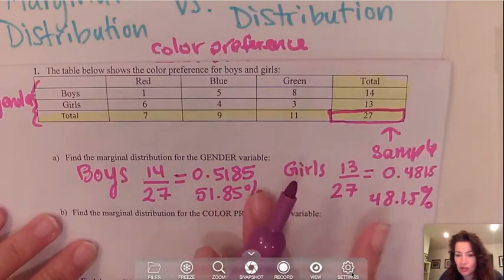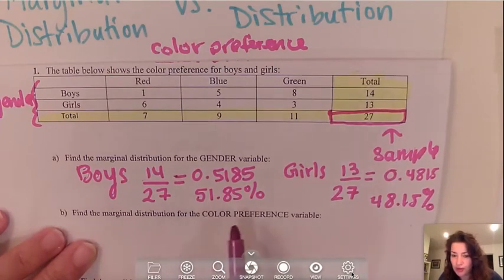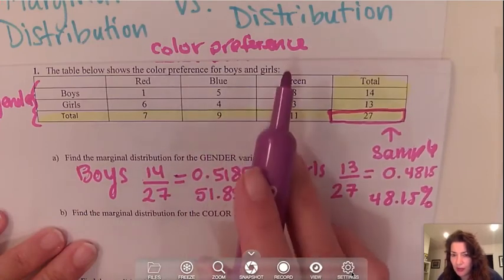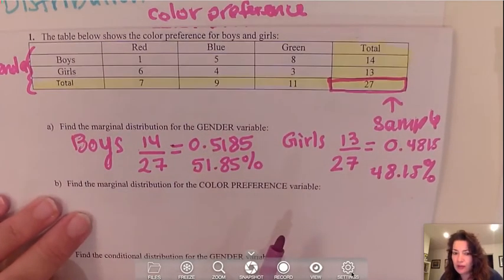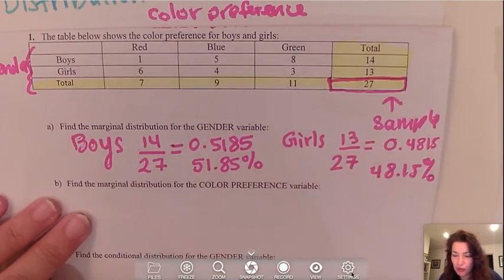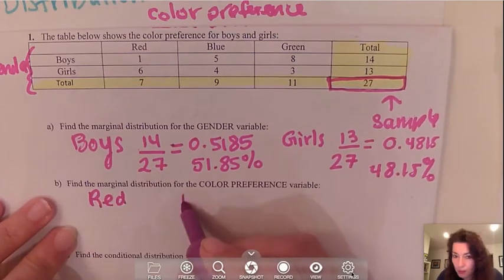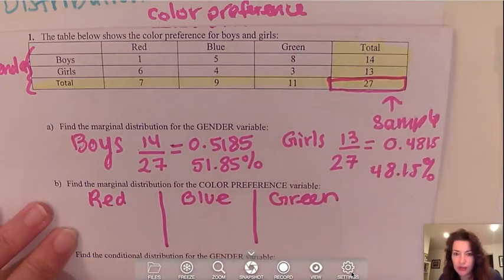Notice that these two add up to 100%. Next, it's asking us to find the marginal distribution for color preference. Color preference is the title of our columns — we have red, blue, and green. So color preference are the columns and gender are the rows. For the color preference, again we're only going to look at my highlighted totals. Anytime you want marginal distribution you only use totals for your numbers. So you can go ahead and write red, blue, and green.